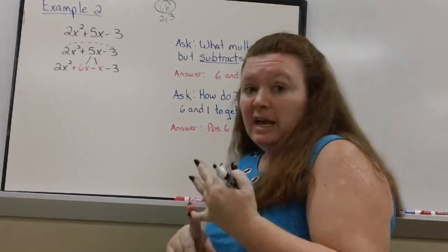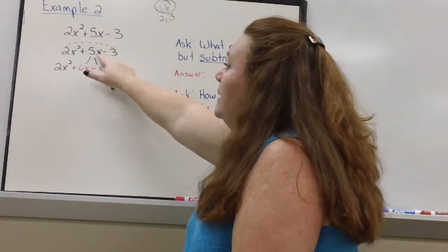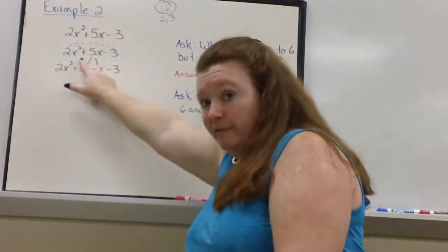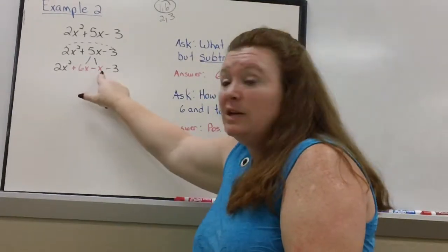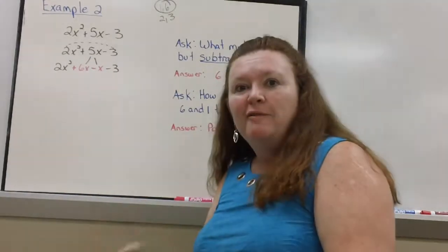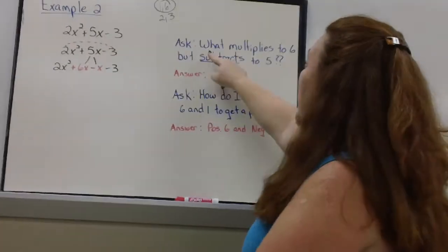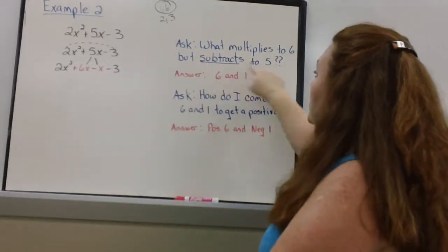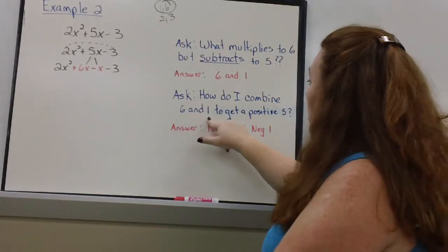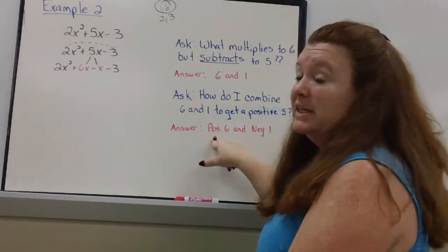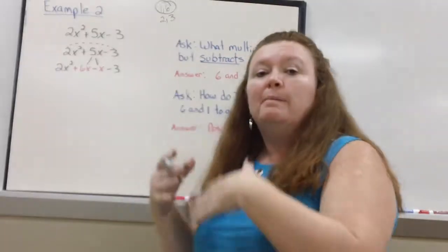So what I'm going to do is break it into a 6x and a 1x. 5x can be a 6x and a 1x. But it's a positive 5. So that would have to be a positive 6 minus 1. That's how these two have to equal what you have right here. But now I have four terms. And I can factor it as four terms. You'll notice I put some questions off to the side here. Ask yourself, how do I combine 6 and 1 to get a positive 5? That would be a positive 6 and a negative 1.